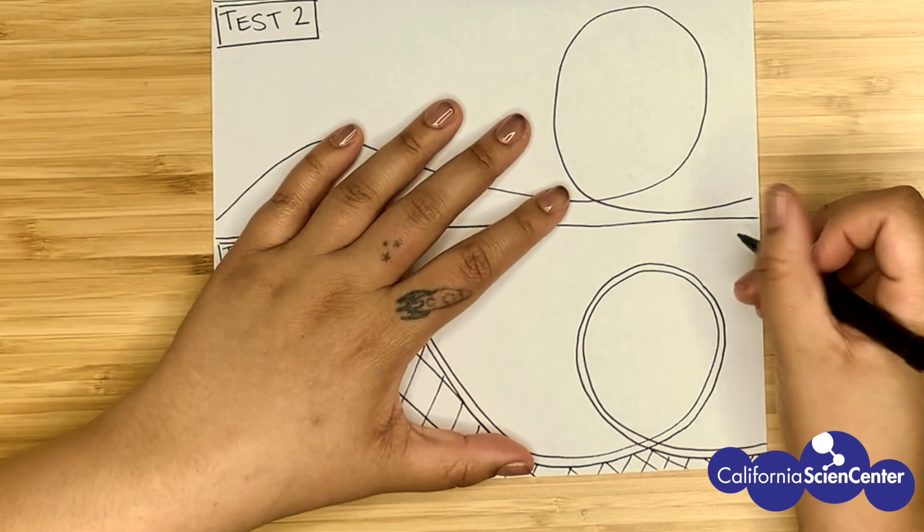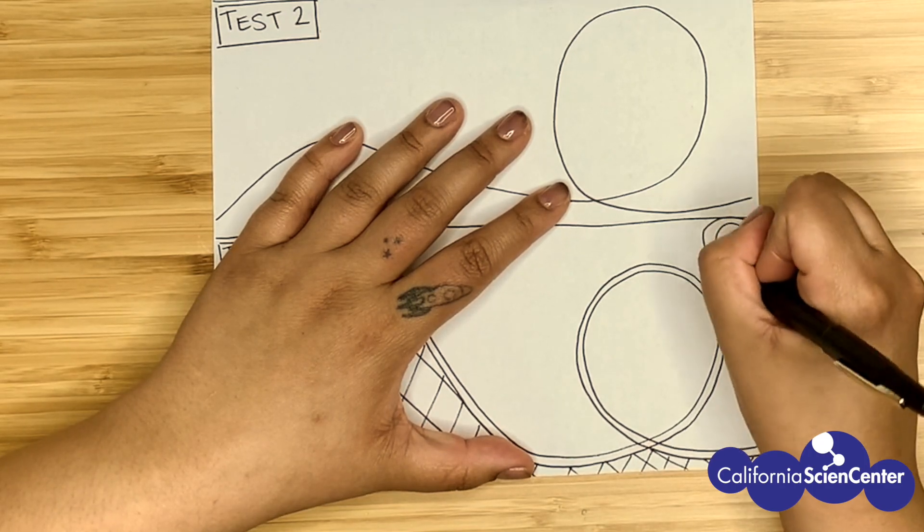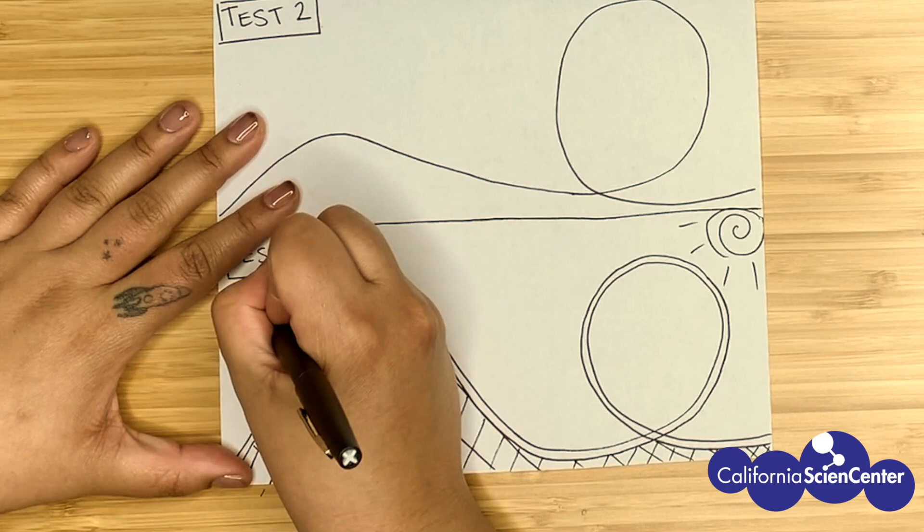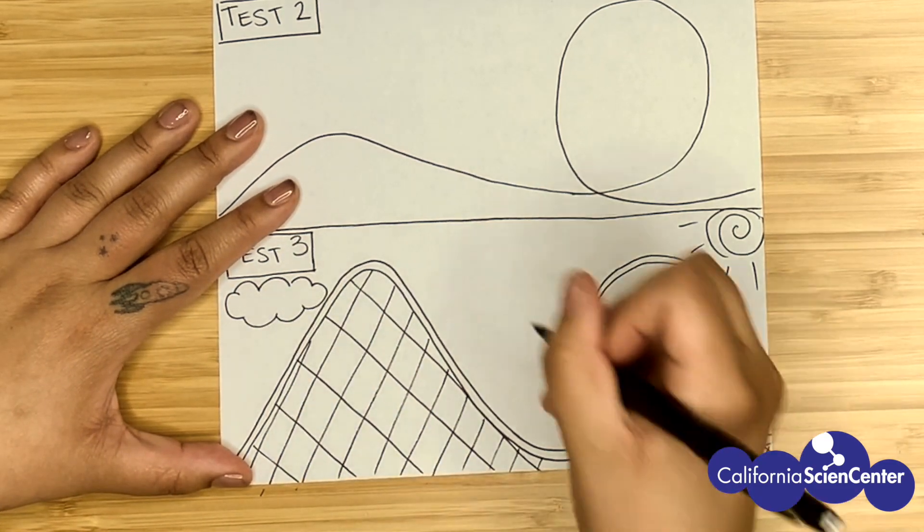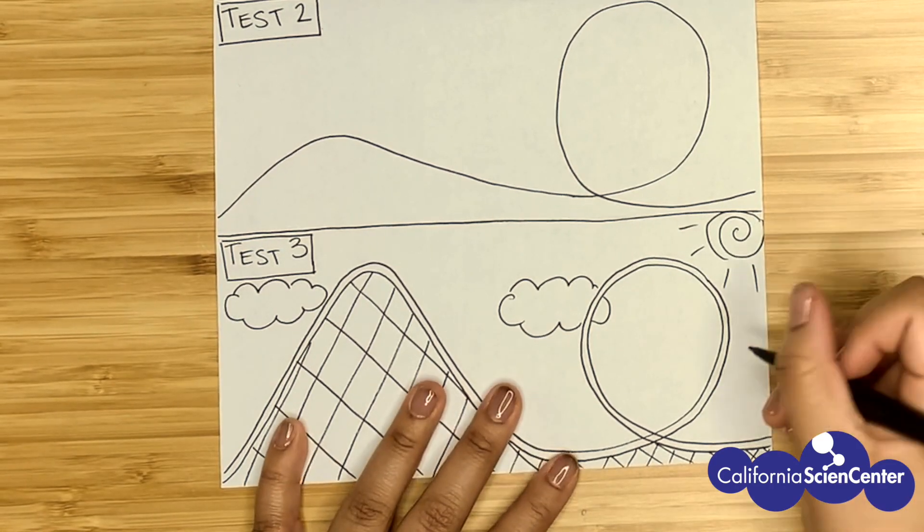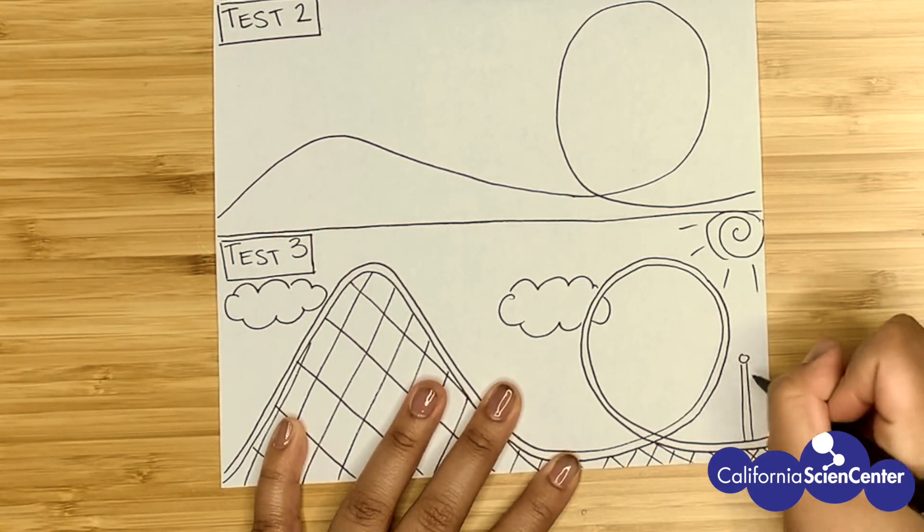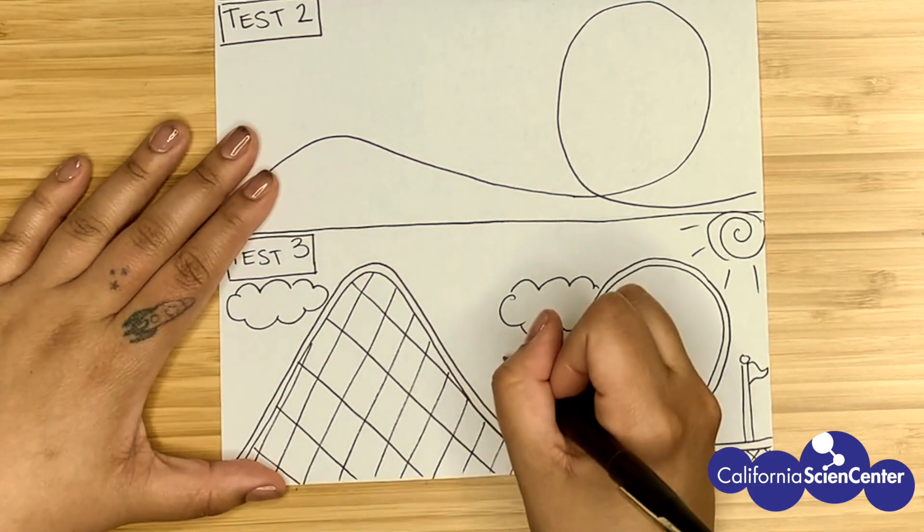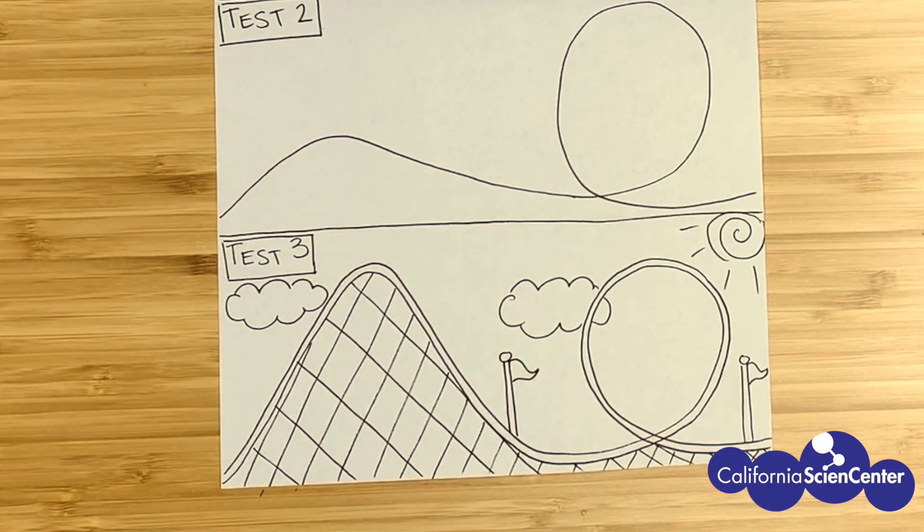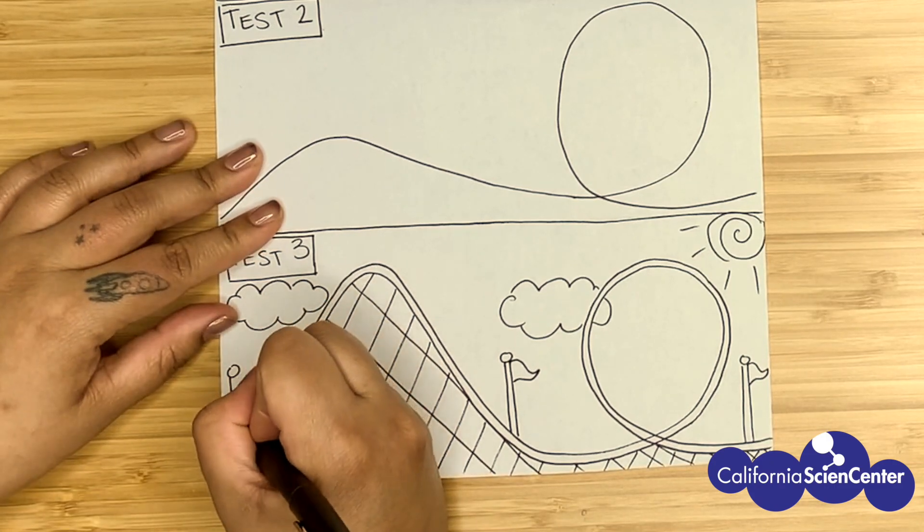Now, I'm going to add details to make my image unique. Again, I sped this part up to make it easier to watch. But if you need to hit pause, do that now.